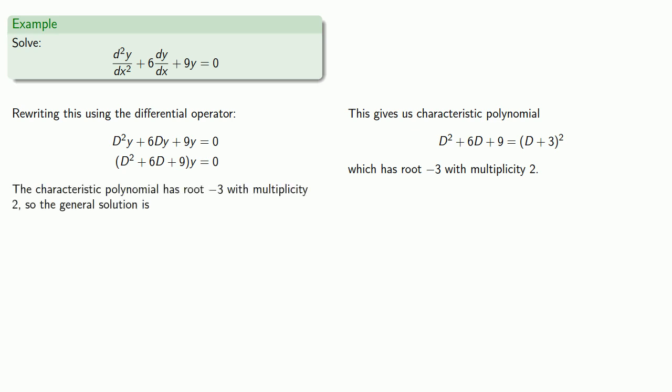And so the general solution is C1 e to power minus 3x, which we get for the root of minus 3. Since our root has multiplicity 2, we get a second solution, x e to power minus 3x.